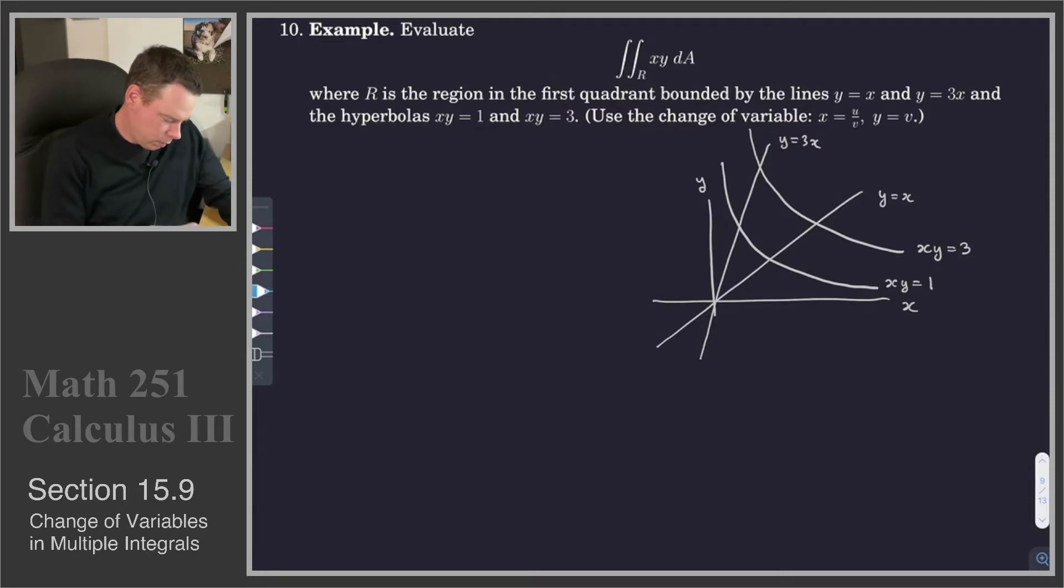And so the region we want is this region trapped between them all. That's what we're trying to integrate over. And now, what we'd like to do is change variables to make that region a little bit simpler.